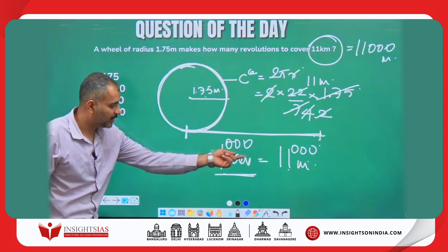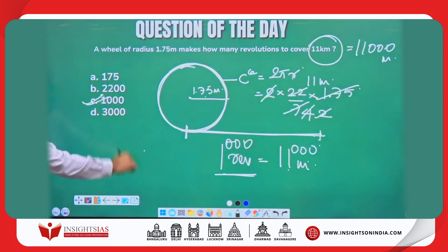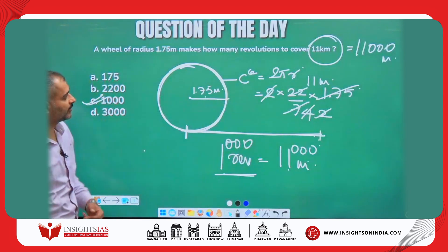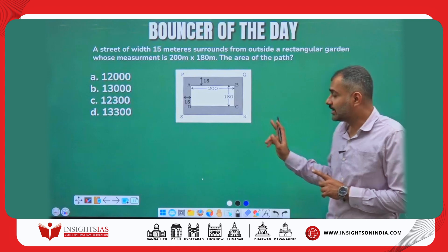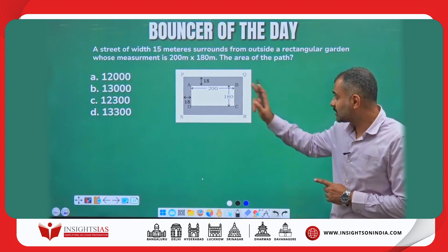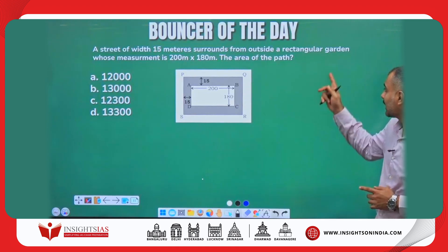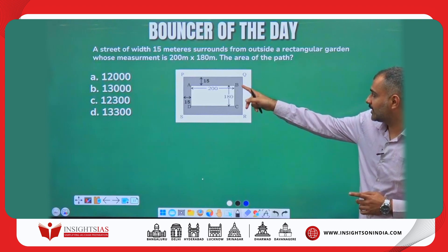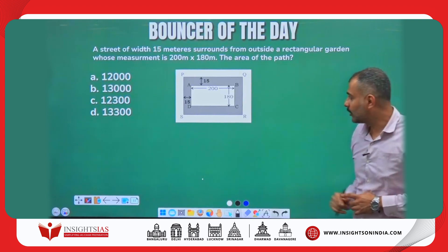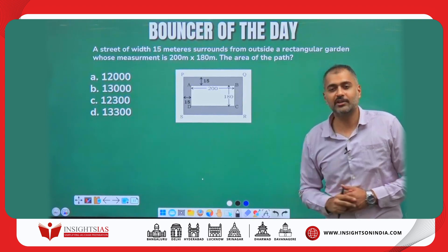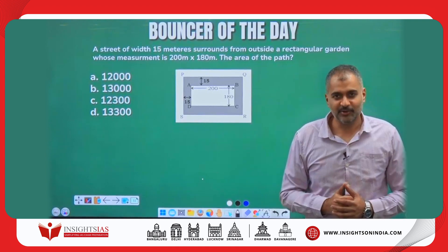The answer is C — 1,000 revolutions. Now here is today's bouncer: a street of width 15 meters surrounds from outside a rectangular garden whose measurement is 200 by 180 meters. What is the area of that path? Try to solve this question and put the answer in the comment section. Thank you, I'll see you in the next video.